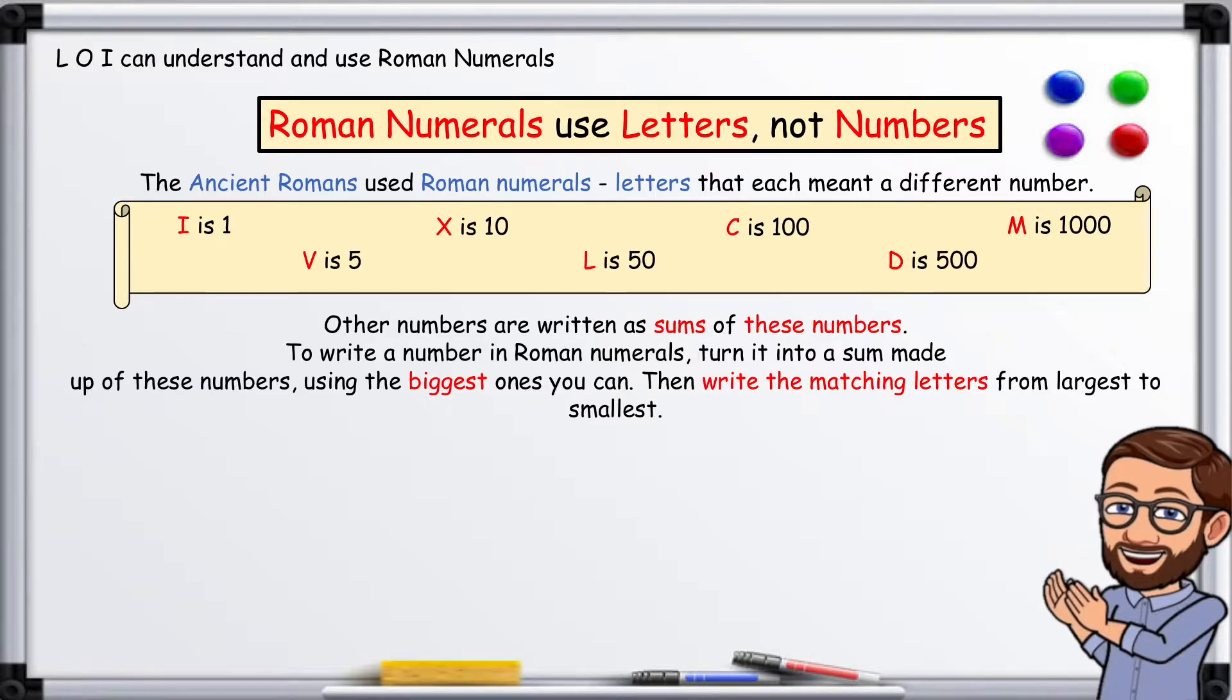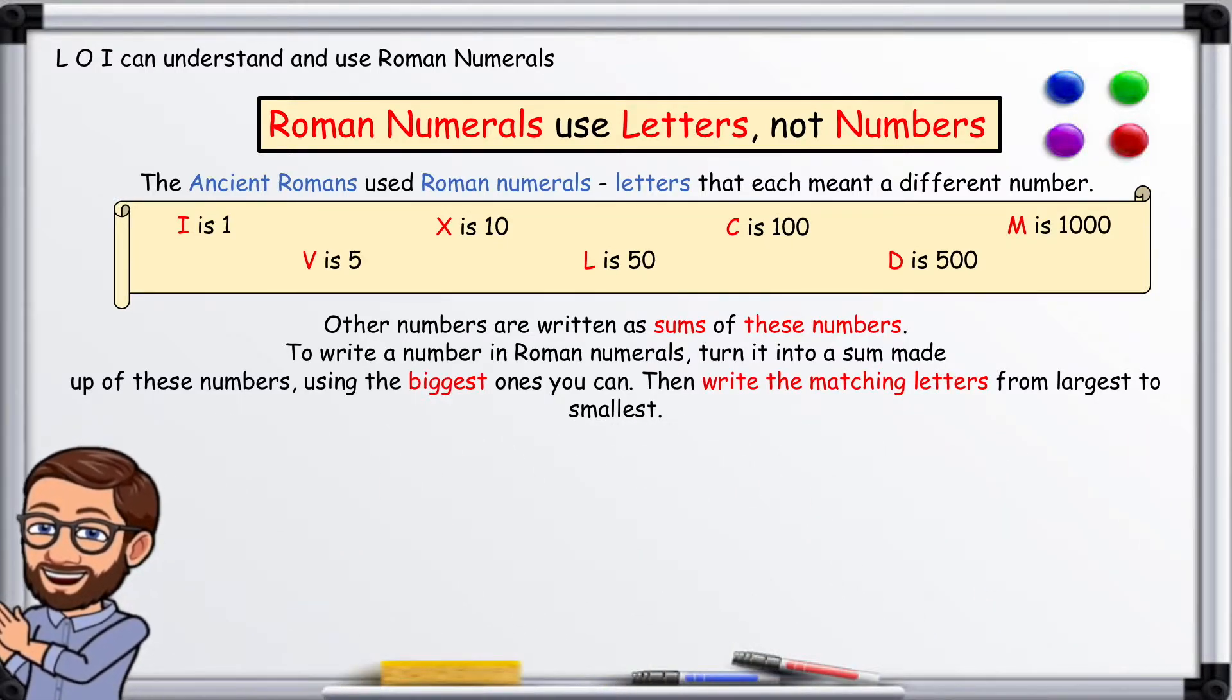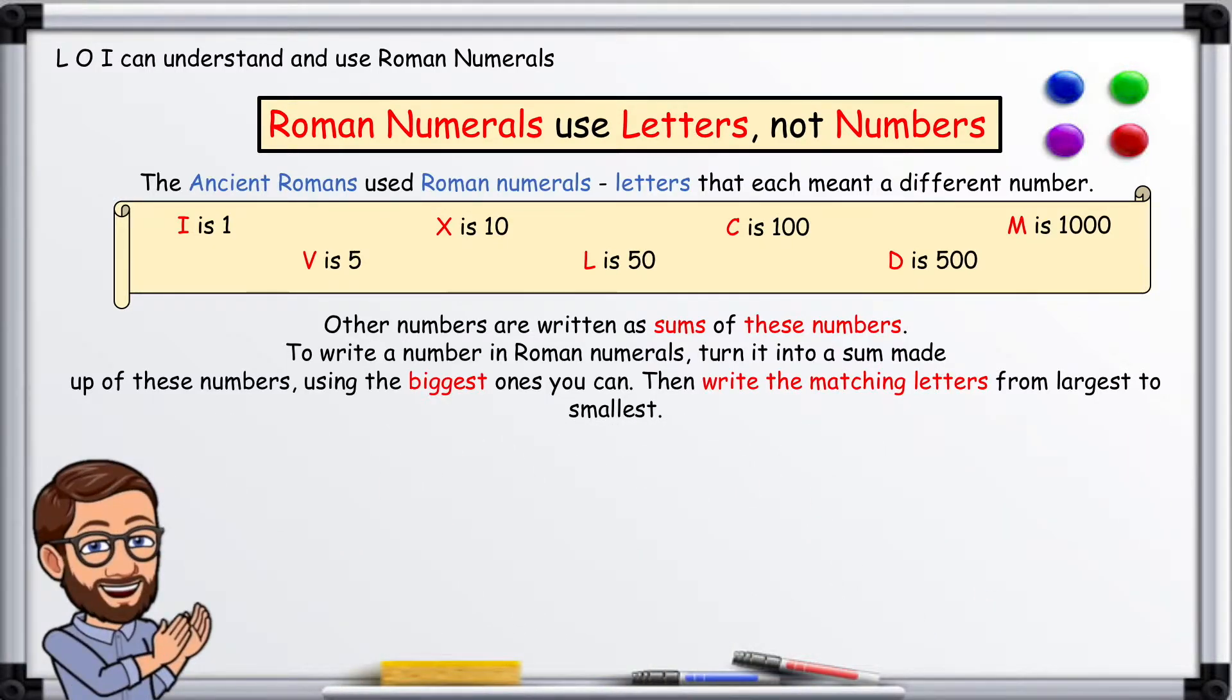Other numbers are written as sums of these numbers. To write a number in Roman numerals, turn it into a sum made up of these numbers, using the biggest ones you can. Then write the matching letters from largest to smallest.